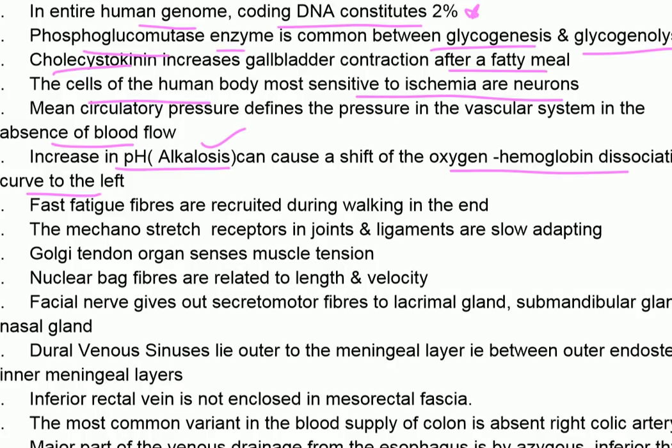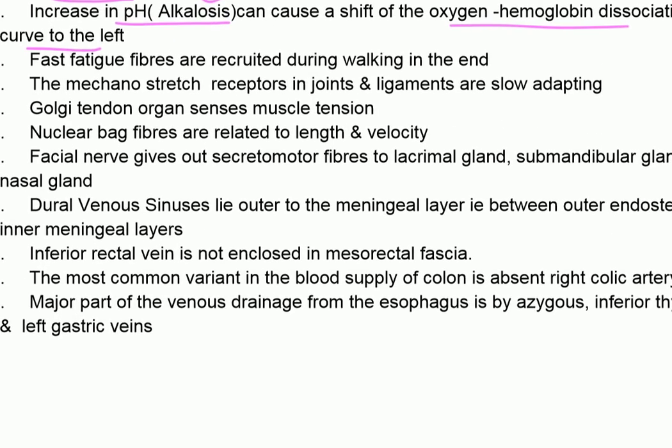Right shift of the oxygen-hemoglobin dissociation curve is caused by increase in temperature, increase in 2,3-DPG, increase in H+ ions, decrease in pH, and reduced affinity.